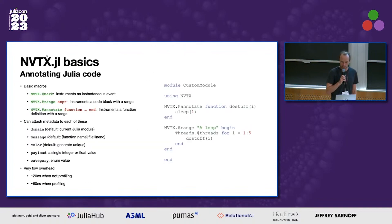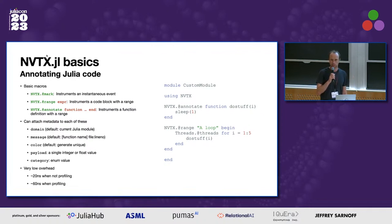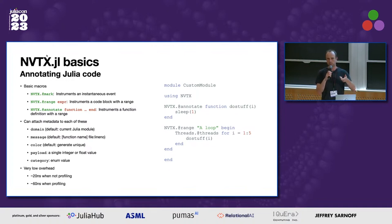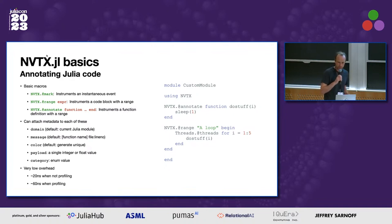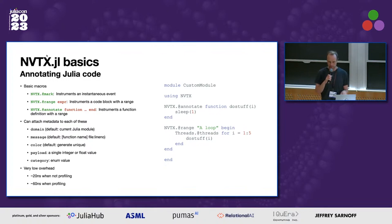So, the basics. There are three main macros. @mark instruments a single snapshot event. @range you put around a block of code, wrapping an expression. And there's @annotate, which is similar to @range except you put it outside a function definition, and it puts the @range inside the function call. Here's a simple example: we define a custom module, load the NVTX package, annotate a simple function which wraps sleep, and put the range around the loop that calls the function. We can attach metadata — things like domain, which we automatically attach from the module.